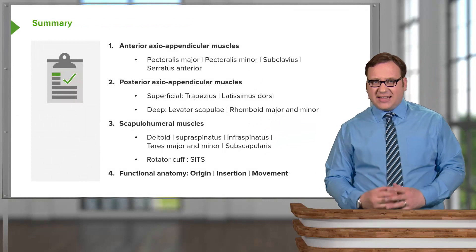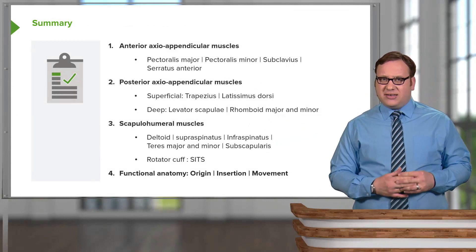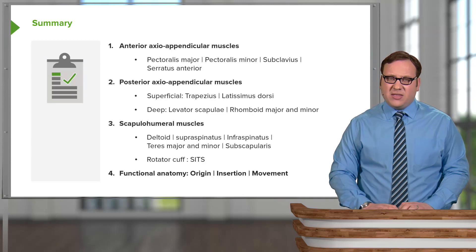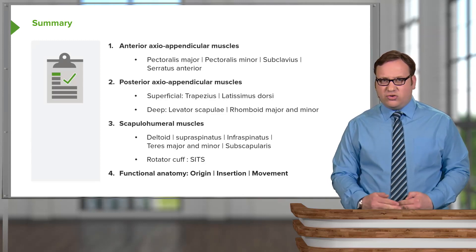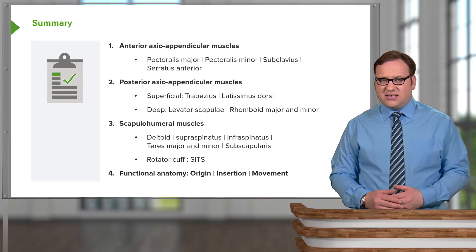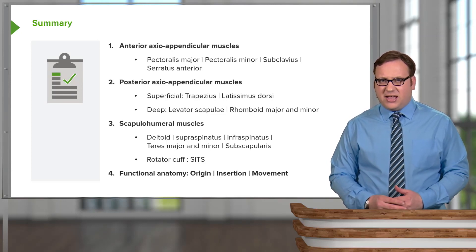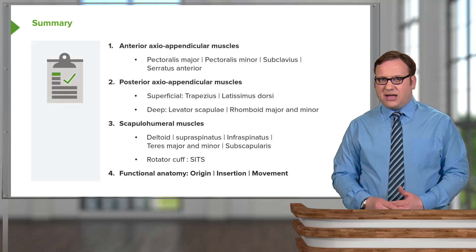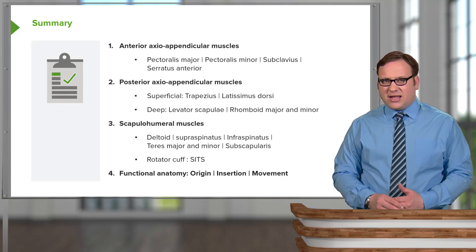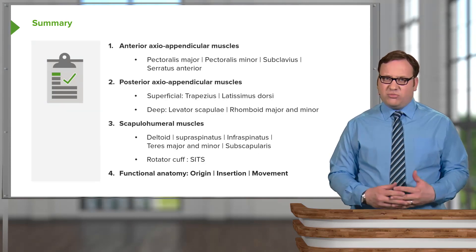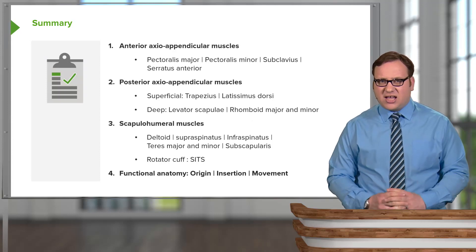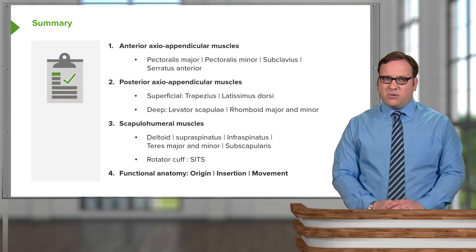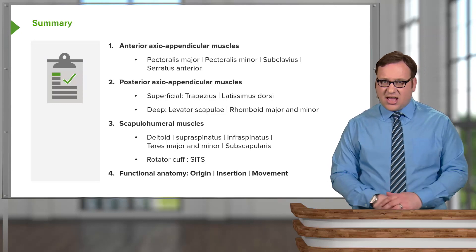In this lecture, we looked at the anterior and posterior axio-appendicular muscles: anteriorly, pectoralis major and minor, subclavius, and serratus anterior; posteriorly, superficial muscles trapezius and latissimus dorsi, and deep muscles levator scapulae and rhomboid major and minor. We then covered the scapulohumeral muscles — deltoid, supraspinatus, infraspinatus, teres major and minor, and subscapularis — specifically the rotator cuff: supraspinatus, infraspinatus, teres minor, and subscapularis — reviewing their origins, insertions, and movements.